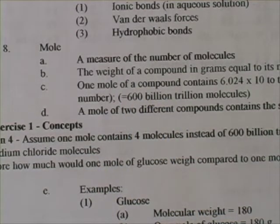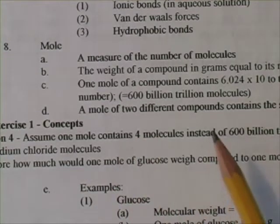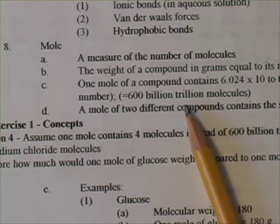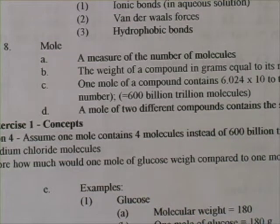Now how much is that? How many particles is it? Well, it's a huge number. Something like 6.024 times 10 to the 23rd power or 600 billion trillion molecules, an inconceivably large number. We call this Avogadro's number.